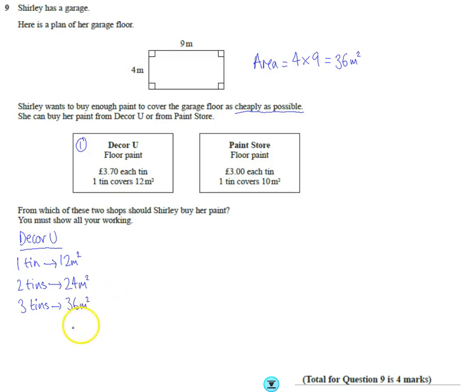Okay, so we're going to need three tins. So I'm going to do three times the cost, and the cost is £3.70. So I'm going to turn that into three lots of three pounds plus three lots of 70p. Well, this is going to be nine pounds here. This is going to be £2.10. So overall, I'm going to get £11.10 as the cost for Decor U.